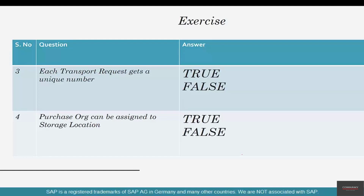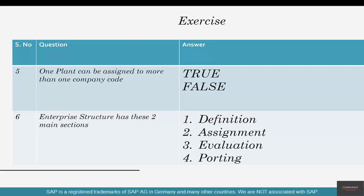Third question: each transport request gets a unique number — true or false? Fourth question: purchase org can be assigned to a storage location — true or false? Fifth question: one plant can be assigned to more than one company code — true or false?